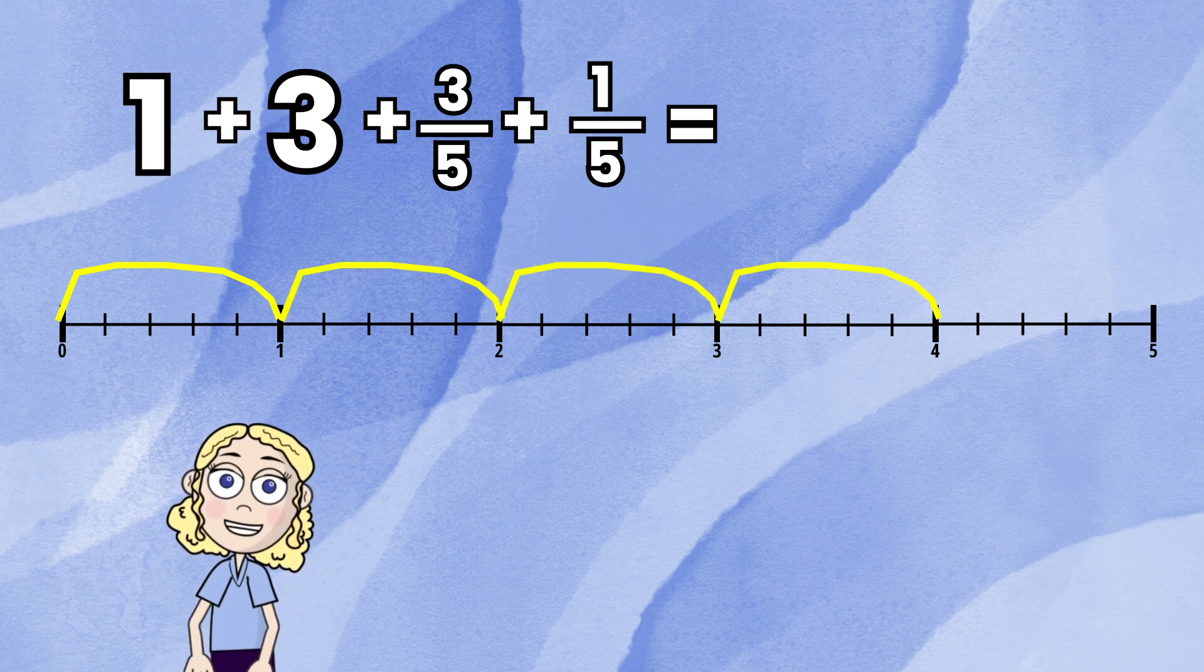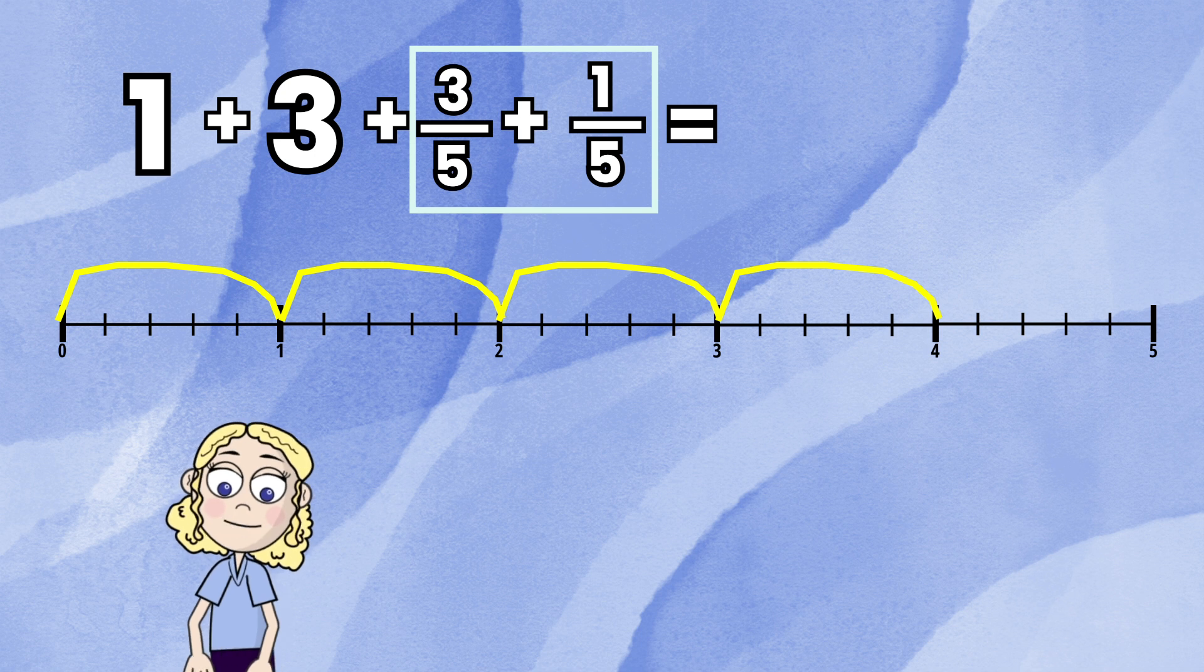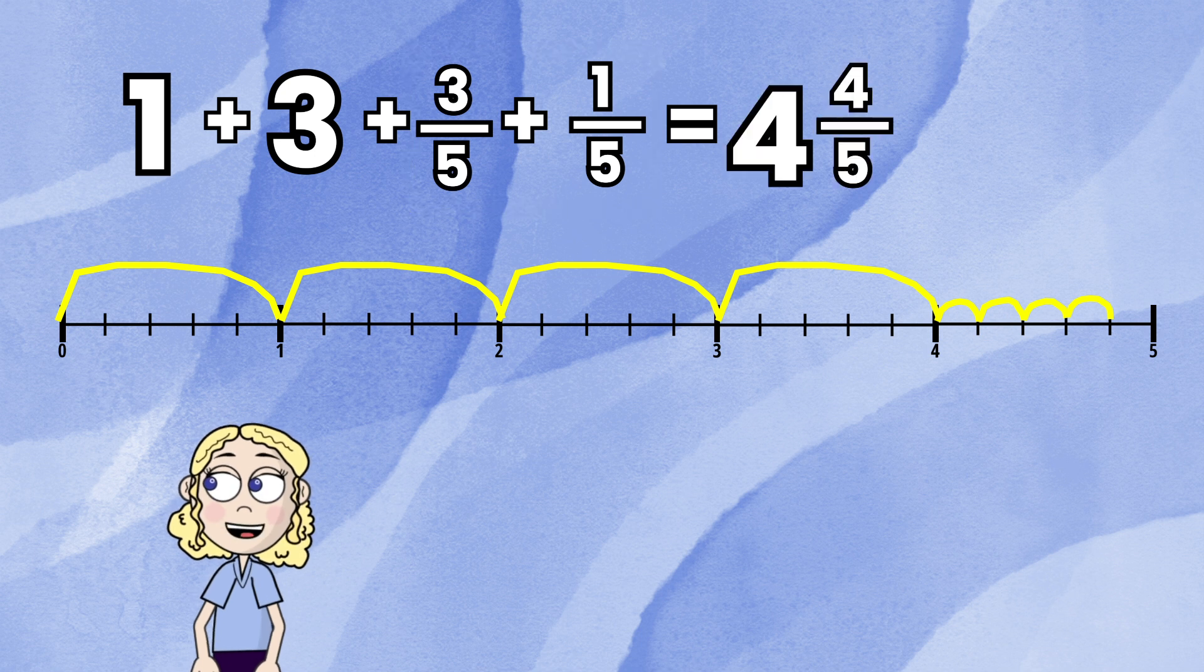Now I'm going to look at the fractions: 3 fifths plus 1 fifth. I'm going to jump 3 fifths and then 1 more fifth. What did I land on? That will be our answer.